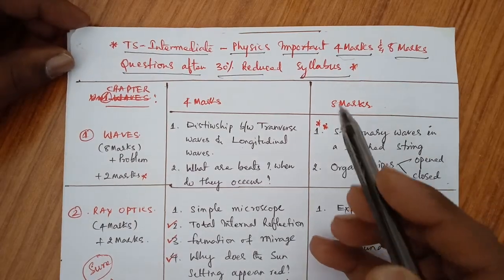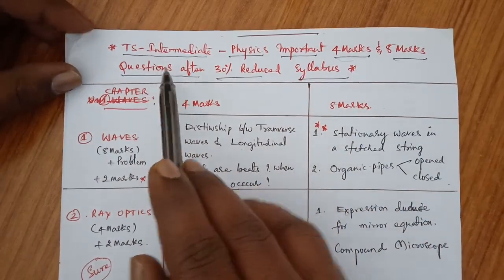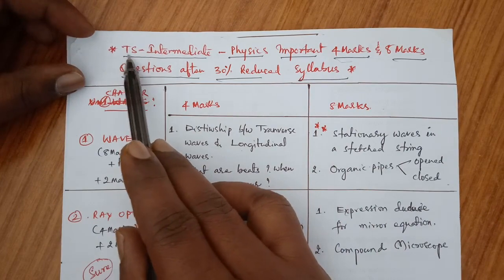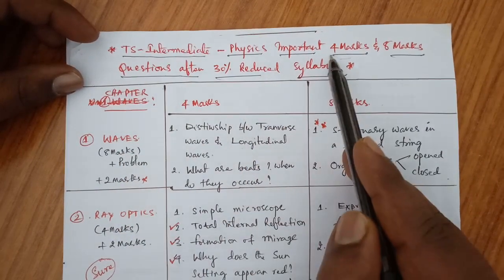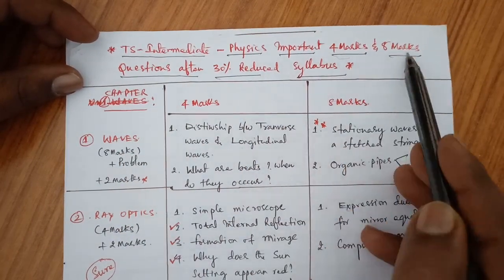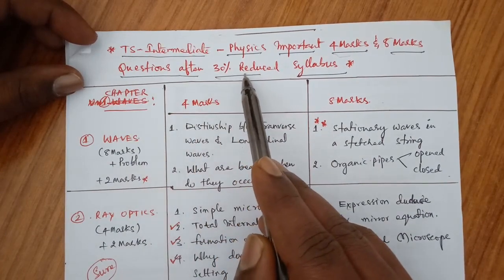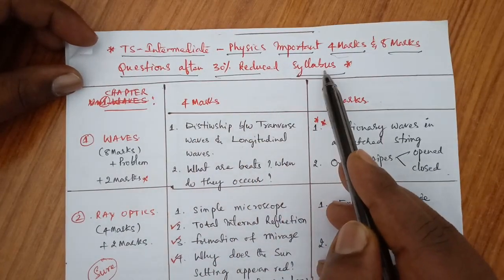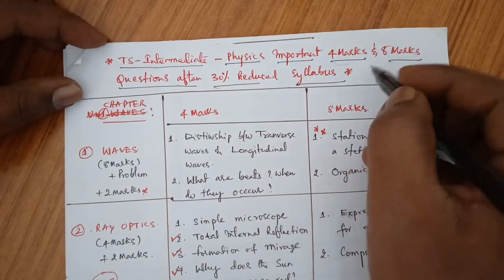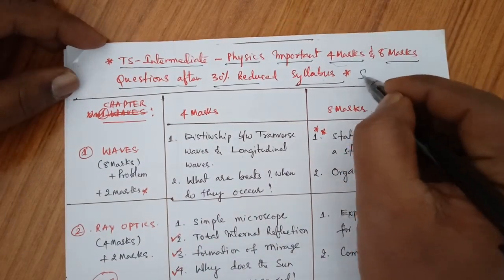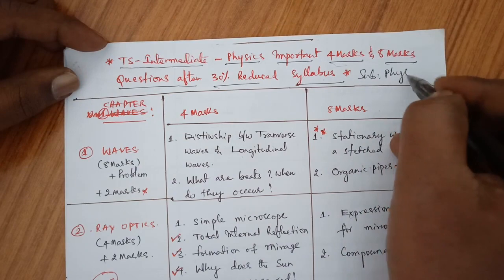Hello friends, welcome back to my class. Today I am going to explain Telangana state intermediate physics important 4 marks and 8 marks questions after 30% of the syllabus is reduced. For MPC and BIPC, the subject is physics.